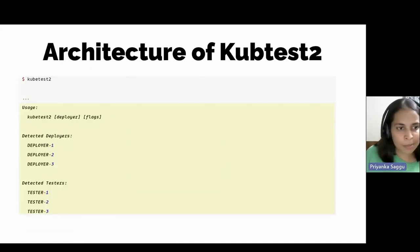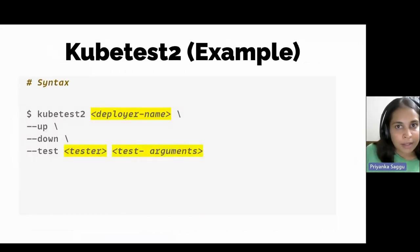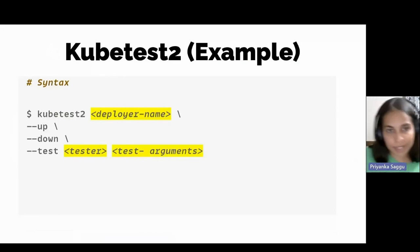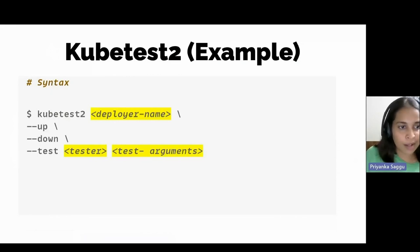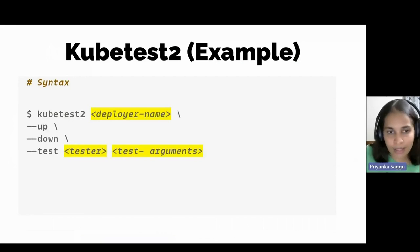We can add multiple deployers — for example, deployer1, deployer2, and deployer3 — and similarly multiple testers. To run a kubetest2 test across the full lifecycle, we write the kubetest2 command followed by the deployer name and up/down flags to deploy and bring down the cluster. We then provide a test flag with the name of the tester and test arguments. For example, a test from the upstream Kubernetes project might use a GKE deployer to spin up a GKE cluster on Google Cloud Platform and perform conformance tests using Ginkgo as the tester.